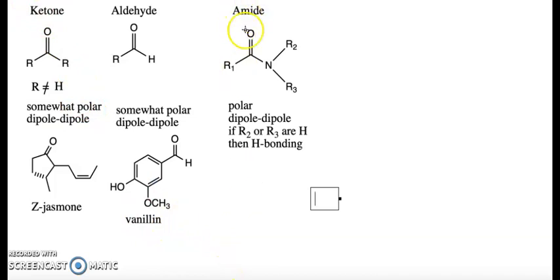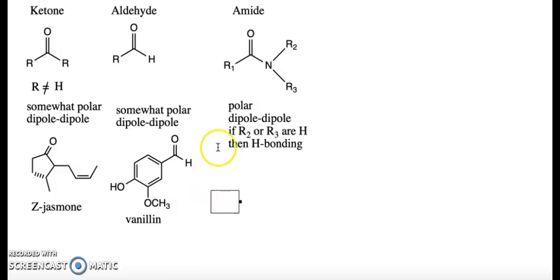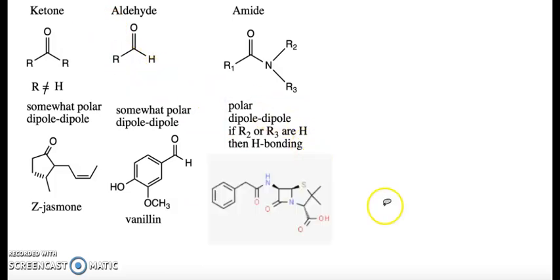The next functional group is the amide. Comparing to the aldehyde and ketone, we've replaced one R group with a nitrogen that has two other substituents — both carbons, both hydrogens, or one of each. It's a polar functional group with dipole-dipole interactions since nitrogen and oxygen are more electronegative than carbon, and if R2 or R3 is a hydrogen, it can also undergo hydrogen bonding. The amide bond holds together the structure of proteins and peptides, and amide bonds appear in examples like penicillin G.